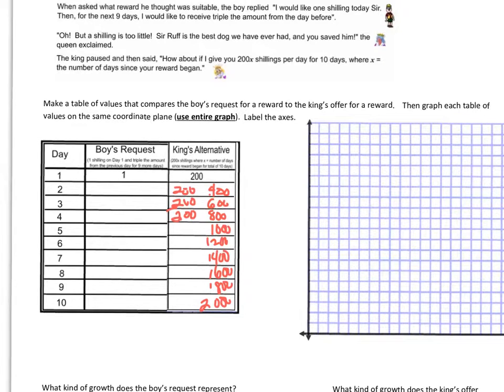But let's look at what the boy requested. He said, hey, I just want a shilling. And I want you to triple it every day. So 1 shilling becomes 3. 3 times 3 is 9. 9 times 3 is 27. 27 times 3 is 81. Well, I don't want to fill in all the blanks for you. You've got to do that yourself.